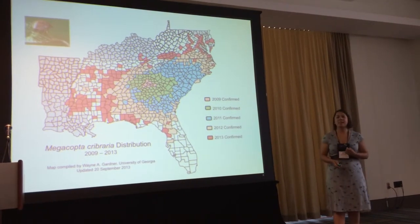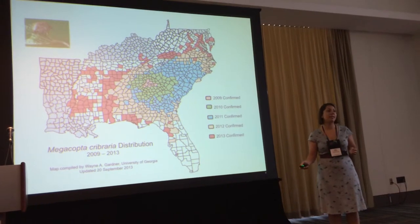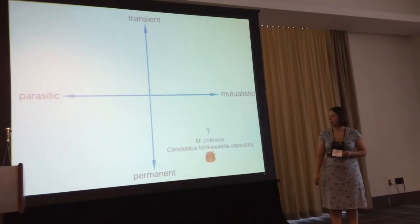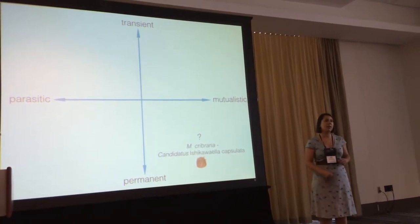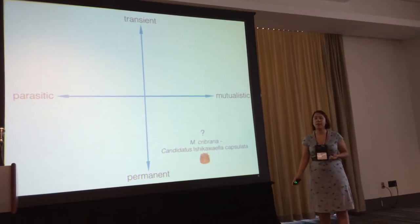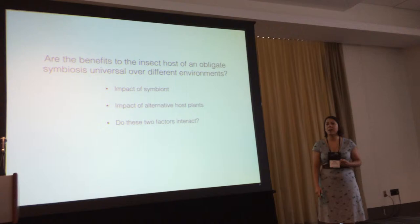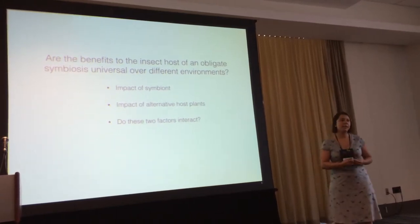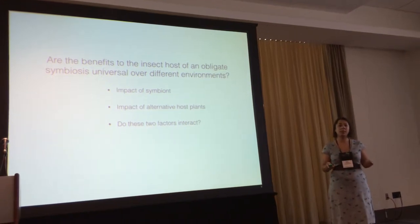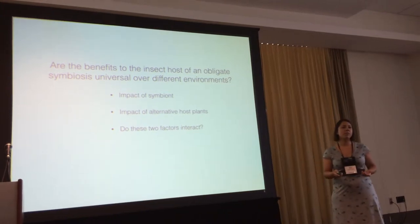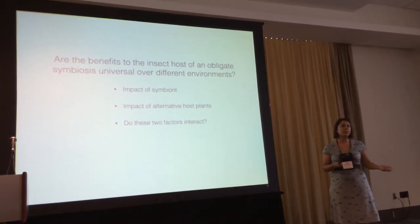So that brings us to this study species, Megacotta cabraria, which invaded in 2009 from Asia, and has since spread all over the southern United States. It harbors an extracellular betaproteobacteria, Ishikoela, that is — in its sister species in Asia — an obligate mutualist. And that's part of what we wanted to test with Megacotta cabraria and its expanded North American range. The question we wanted to ask was: is it possible that this obligate, vertically transmitted bacterial symbiont — the benefits that it provides to its host — are those benefits universal, or could they possibly change in the context of different environments? We wanted to look at the impact of the symbiont separate from the impact of host plant, and could these two factors potentially interact?